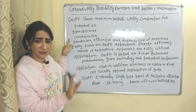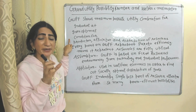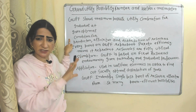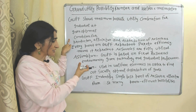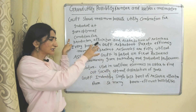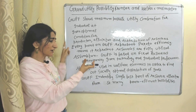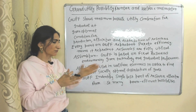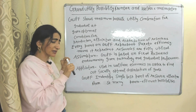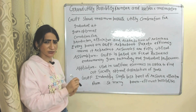Every point on the GUPF shows Pareto efficiency because resources are fully utilized. GUPF is based on fixed factors, given technology, and individual preferences. We mainly apply GUPF in welfare economics in order to find out the socially optimal distribution of goods, because it identifies a single best point of resource allocation from many Pareto efficient possibilities.